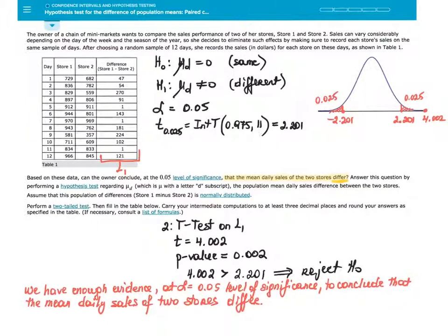Remember, degrees of freedom is found by taking the sample size minus 1. So 12 minus 1 is 11. When you input this into TI-84, you get 2.201. Therefore, there are two critical values, negative 2.201 and positive 2.201.